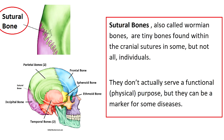While talking about the flat bones of the skull, it's a good time to mention another minor category called sutural bones or wormian bones. The sutures on skull bones can be very jagged and irregular, and sometimes those jagged suture joints can form a little independent bone — that's all a sutural bone is. They don't actually serve a functional physical purpose, but they can be a marker for some diseases.